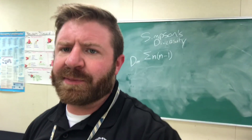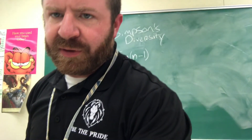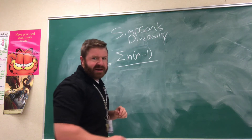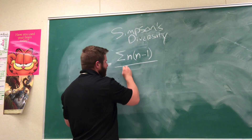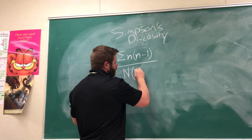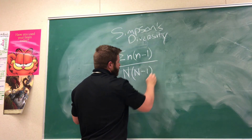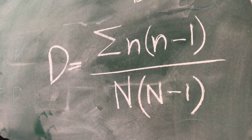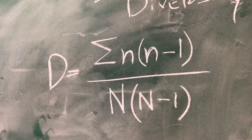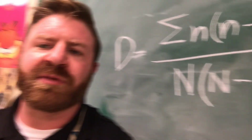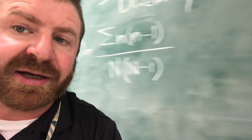There's also a capital N. That gets divided by capital N, which is the total number of cars you counted, times N minus 1. So: sigma of lowercase n times (n minus 1), add all those up for each species, divided by capital N times (N minus 1). You don't need to add anything up for capital N because you already totaled it.